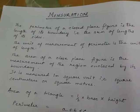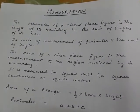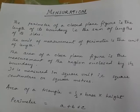The perimeter of a closed plane figure is the length of its boundary, that is, the sum of length of its sides.